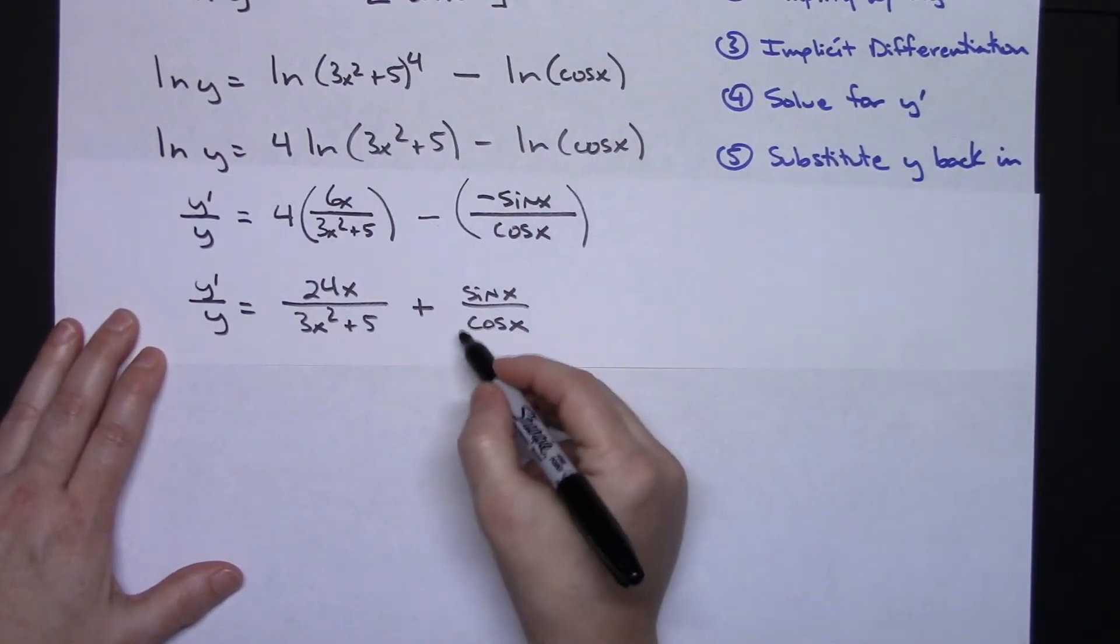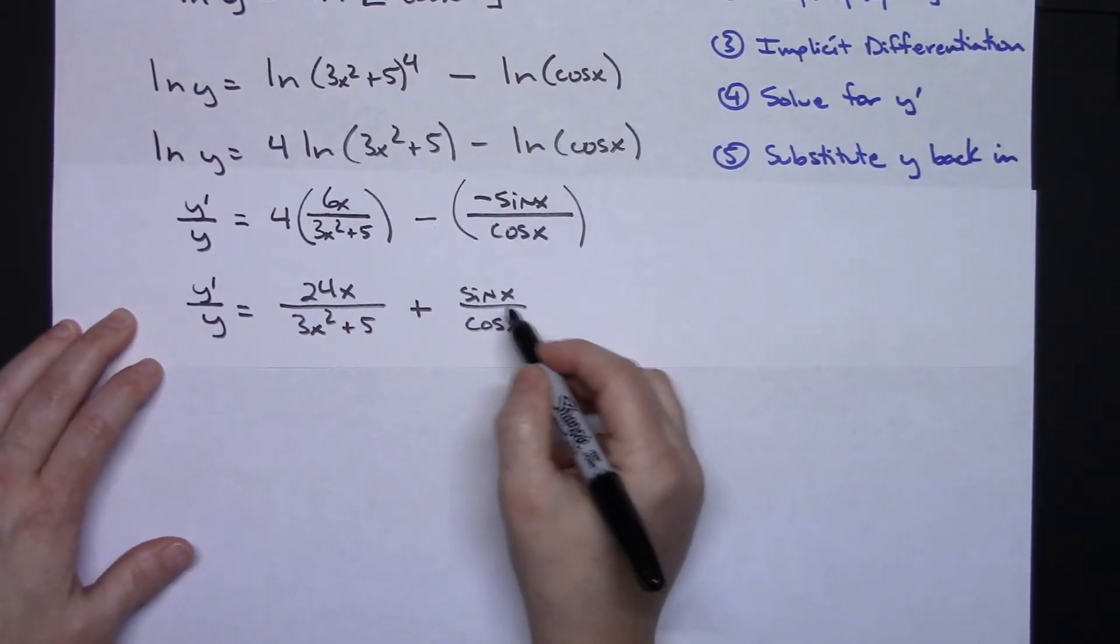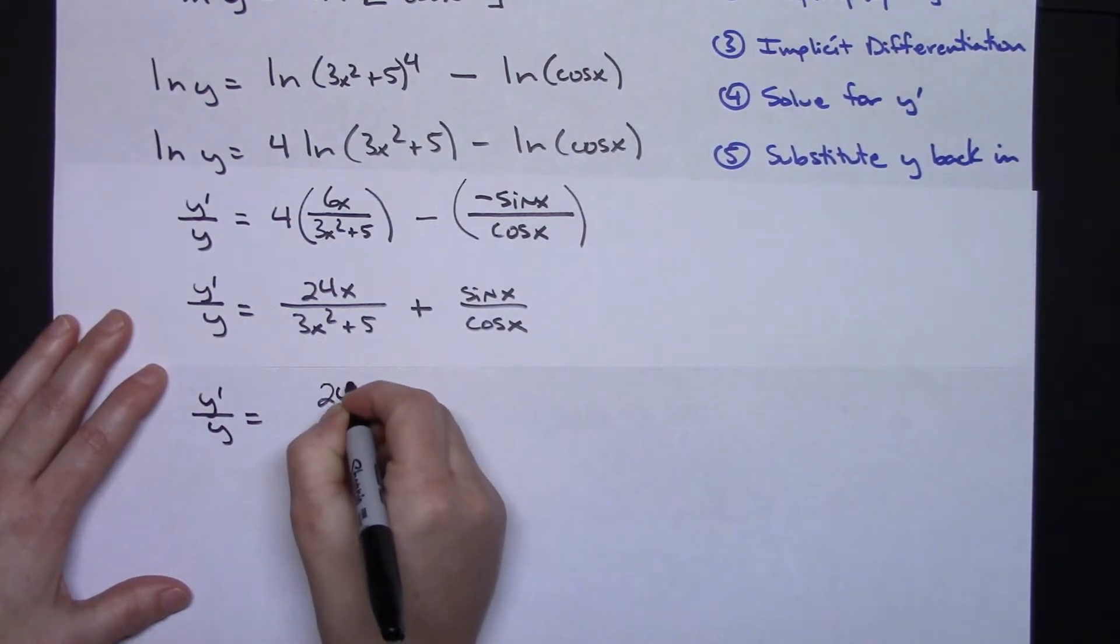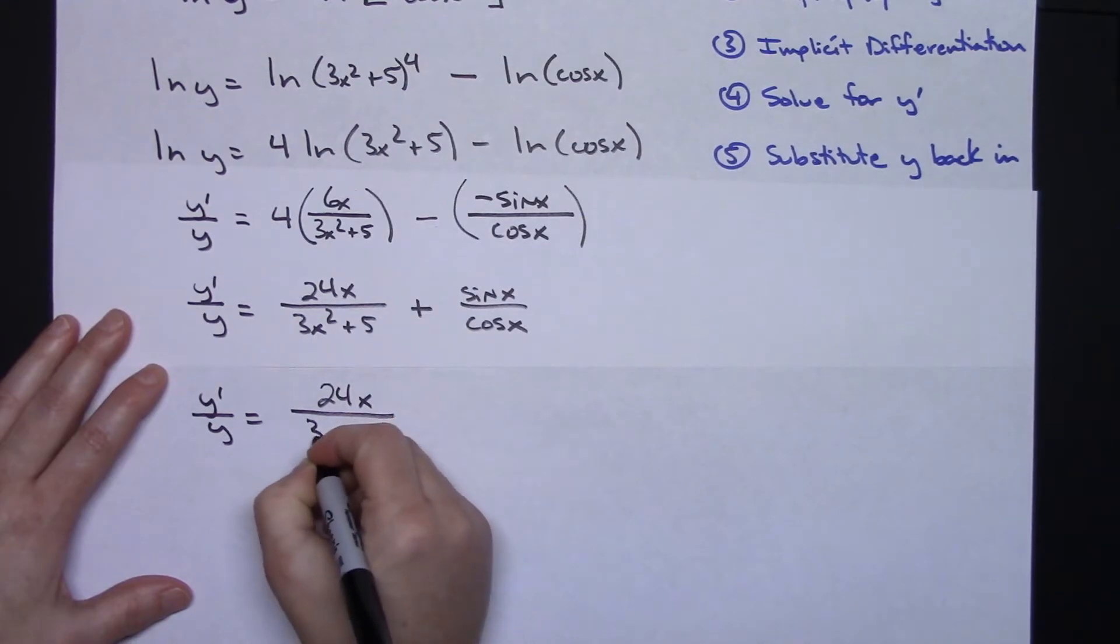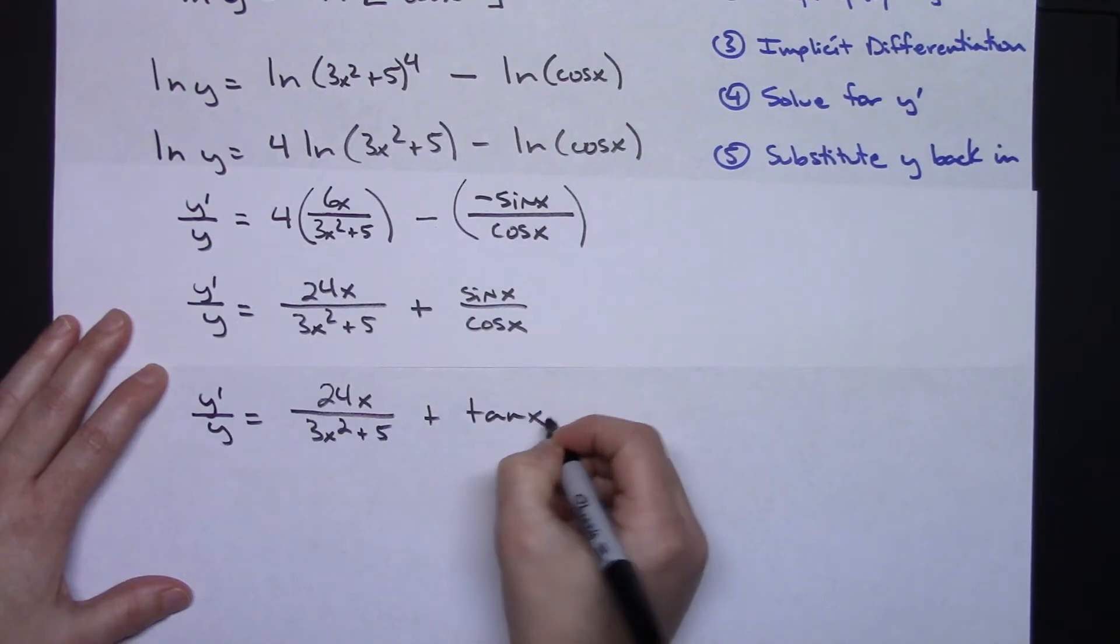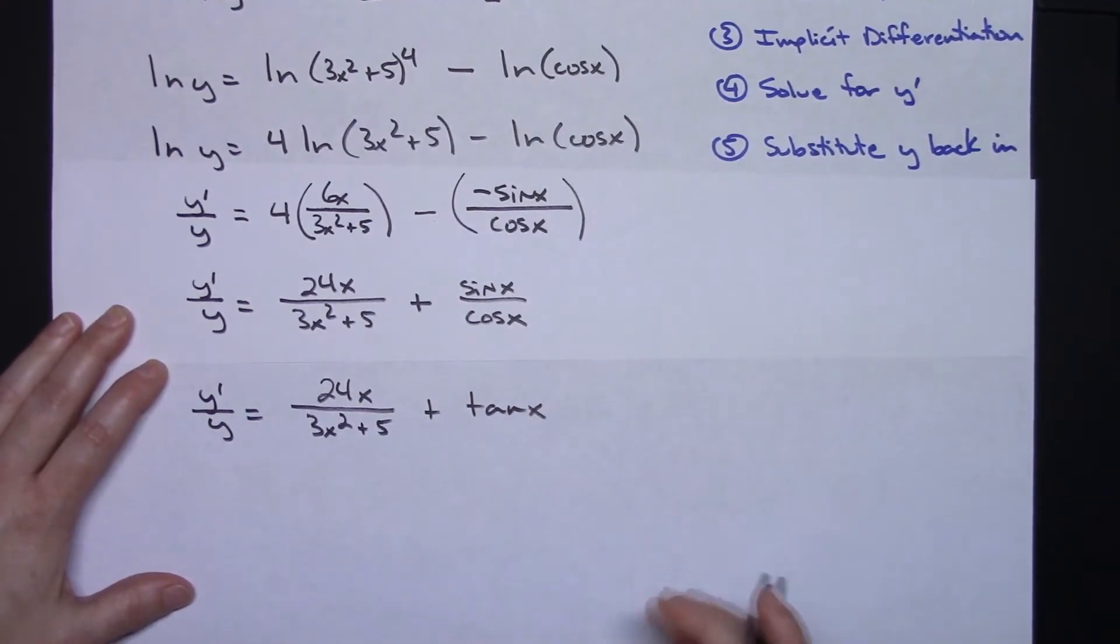So I think you know this is tangent. I think I am going to go ahead and do a little bit more substituting here. So y prime over y equals 24x over that 3x squared plus 5 and then I'm going to change that to a tangent. If we can do a simple substitution like that we might as well do that.